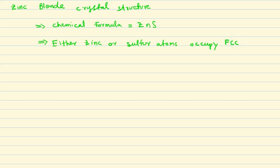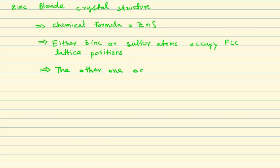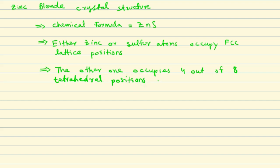Either zinc or sulfur atoms occupy the FCC — that is, face-centered cubic — positions. The other atom type occupies four out of eight tetrahedral positions within the FCC unit cell.